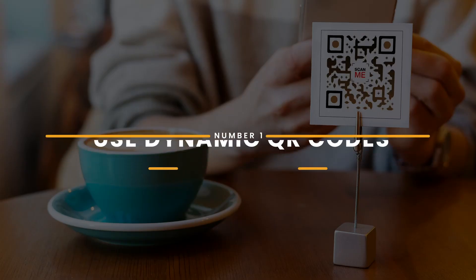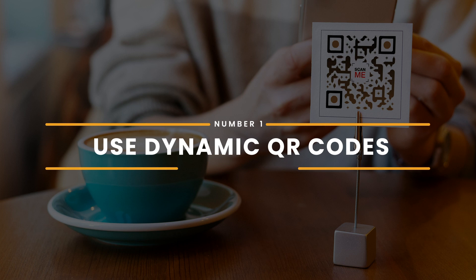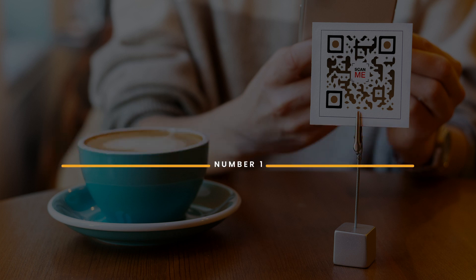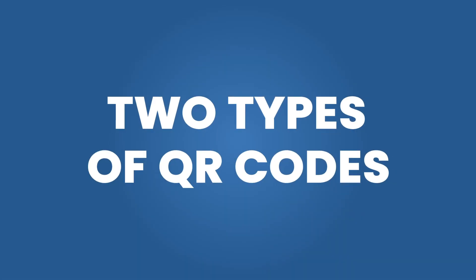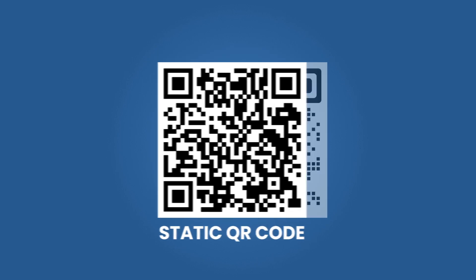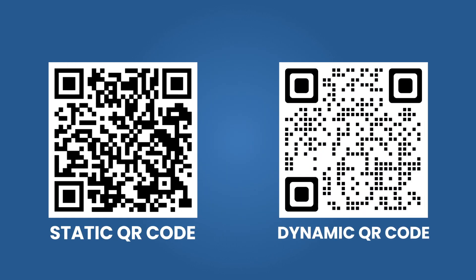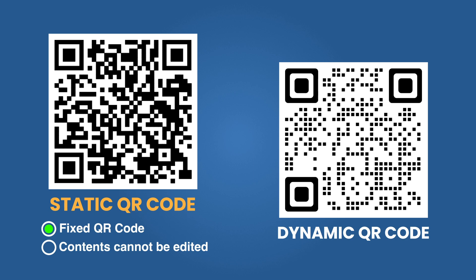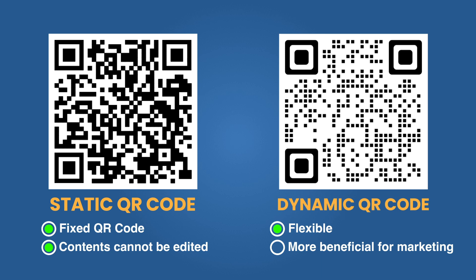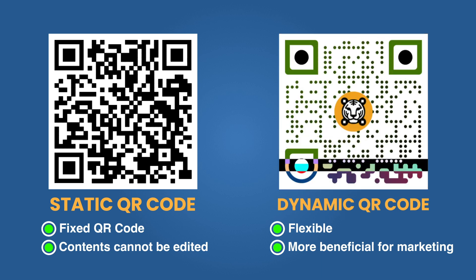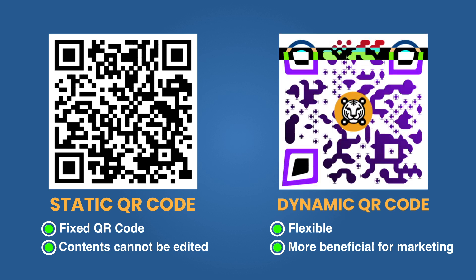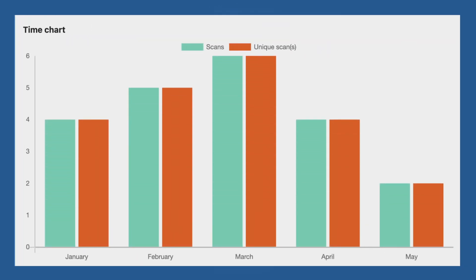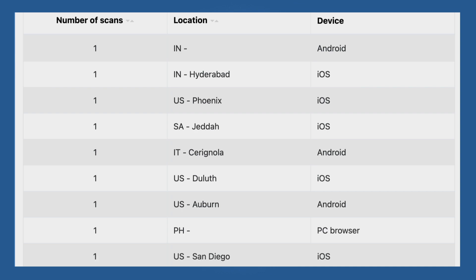Number 1: Use dynamic QR codes. There are two types of QR codes — static and dynamic. Static QR codes are fixed and you can't edit the URL after you've printed the QR code. Dynamic QR codes, on the other hand, are the flexible type and your best bet for marketing. You can set up a QR code tracking system to track the number of scans, when the user scans, their location, and the user's device type.